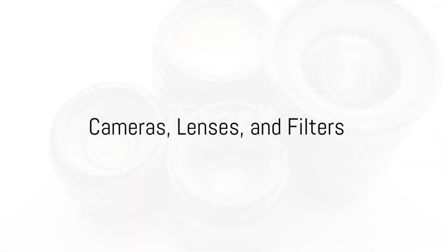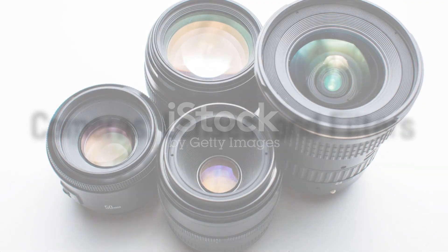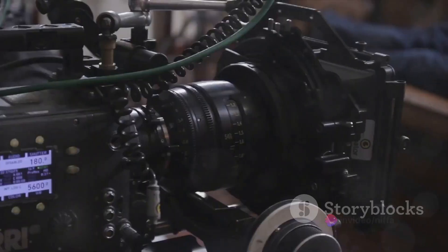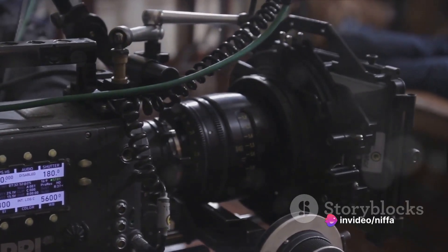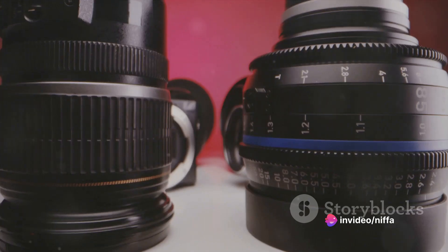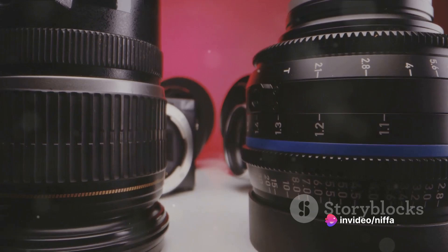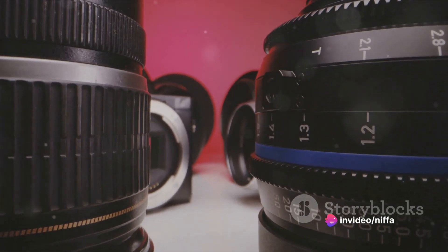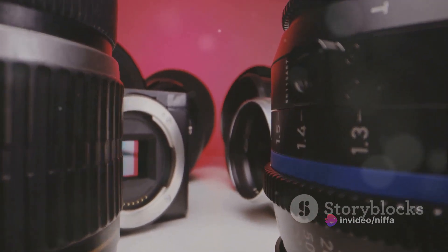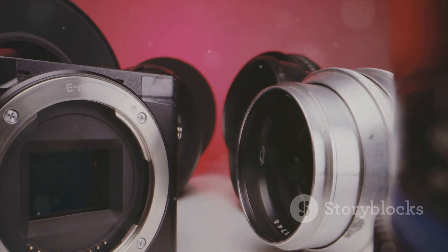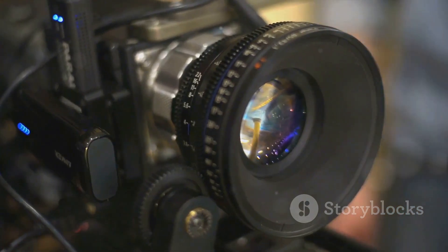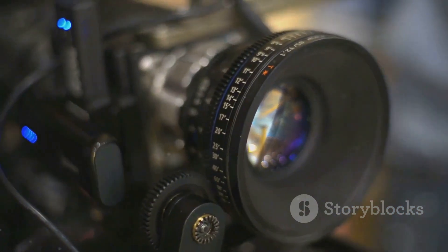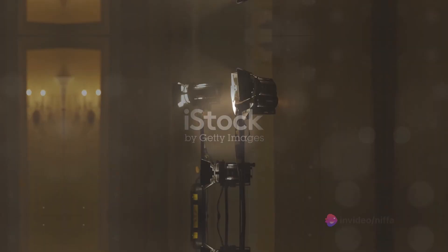The first element we'll delve into is the choice of cameras, lenses and filters. This aspect of filmmaking is like choosing the right tools for a job. Different cameras and lenses can create different effects and moods, while filters can subtly alter the feel of a scene. It's all about selecting the right tools to bring your vision to life.